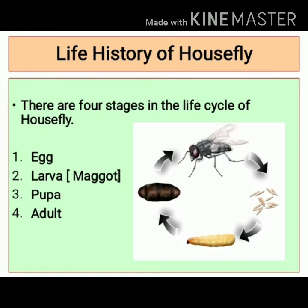Life history of the house fly: there are four stages in the life cycle of the house fly. These stages include the egg stage, larva or maggot stage, pupa, and adult stage.